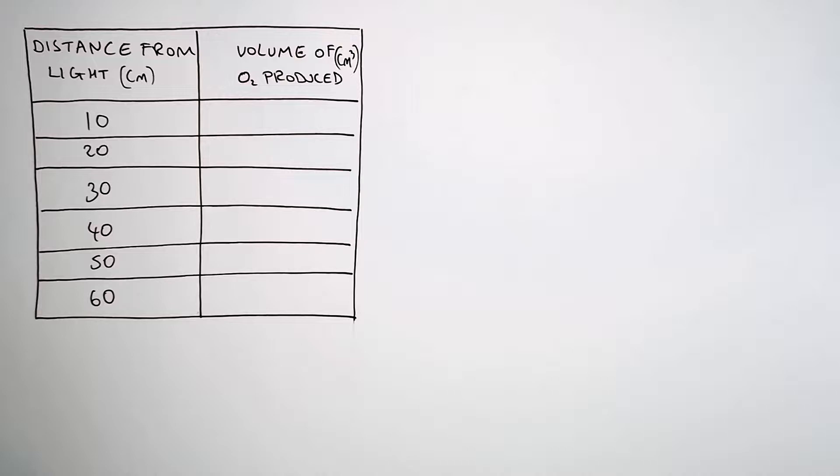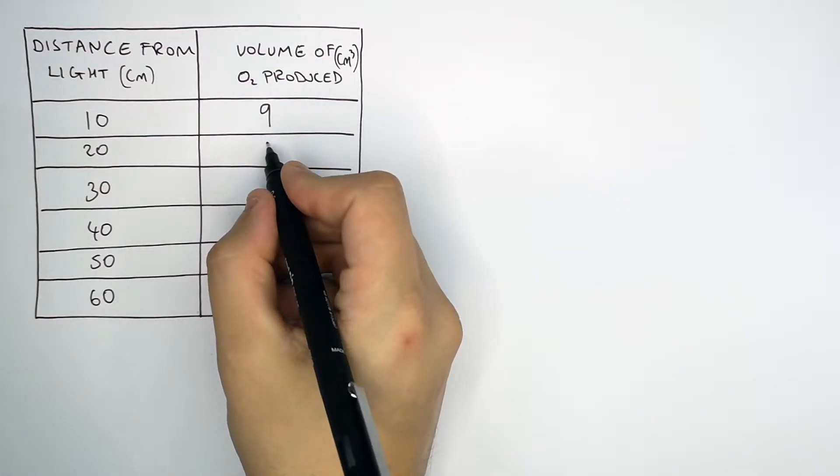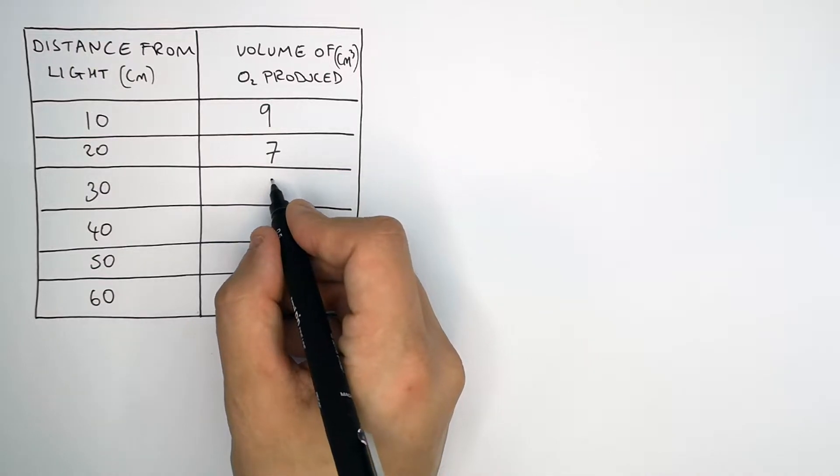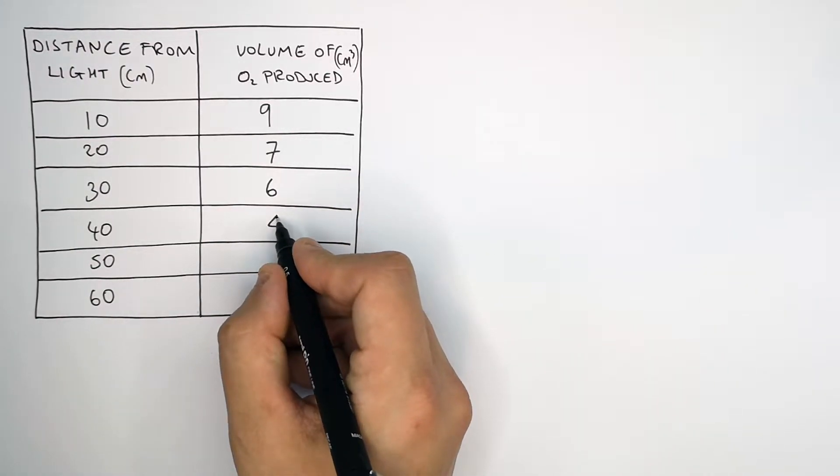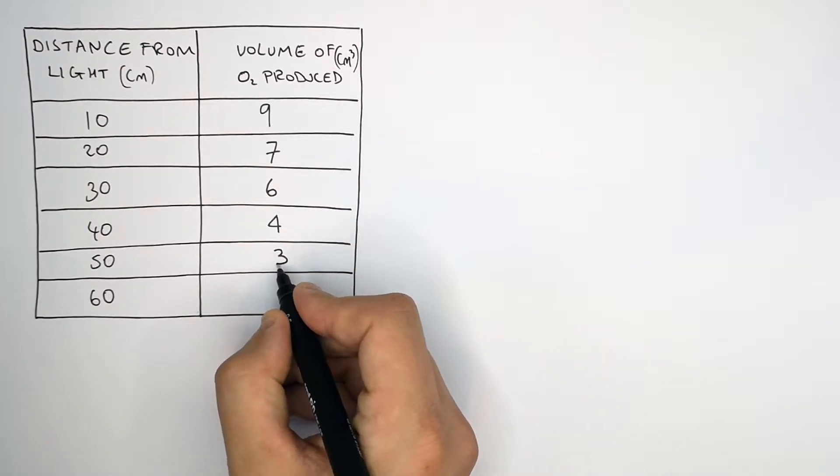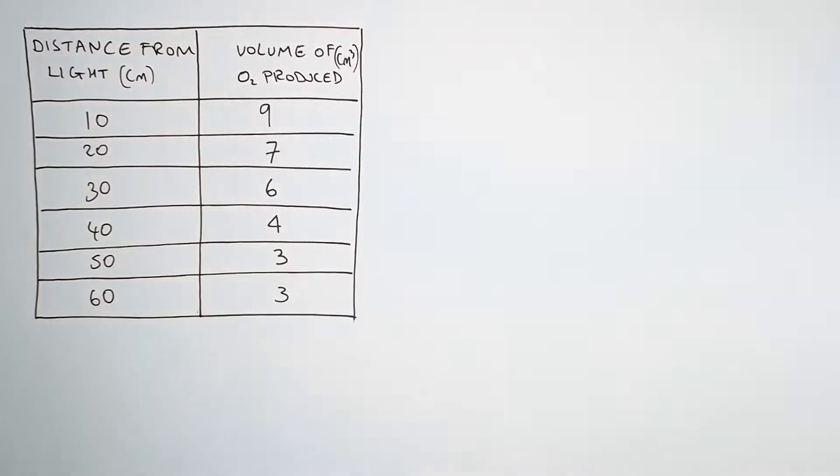So at 10 centimeters away from the light source, there was 9 centimeters cubed of oxygen collected by the syringe. At 20 centimeters away, it was 7. At 30 centimeters away, it was 6. At 40 centimeters away, it was 4. And then at 50 and 60 centimeters away from the light source, there was 3 centimeters cubed oxygen volume collected by the syringes.